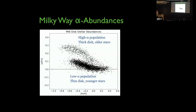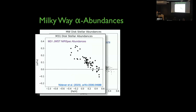What do the Milky Way's abundances look like? We have two alpha populations: the high-alpha population, corresponding to the thick disc — older stars — and the low-alpha population, roughly corresponding to the thin disc — younger stars. The existence of this alpha bimodality is still debated. Interestingly, if we look at M31 using new JWST NIRSpec data, we don't see this alpha bimodality at all, which is very confusing and worthy of its own talk.